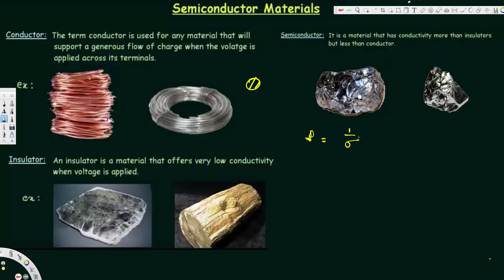Now let's look at the properties of conductors, insulators, and semiconductors. The first property is resistivity, denoted by rho (ρ), which is inversely proportional to conductivity (σ). We can also write resistivity in terms of resistance: ρ = RA/L, where R is resistance, A is cross-sectional area, and L is length of the wire. The unit works out to ohm-meter, and resistivity is fixed for a given material.